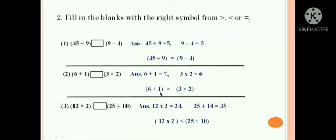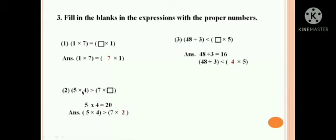Let us begin with the third one. 12 into 2 and another side 25 plus 10. Now 12 twos are 24 and 25 plus 10 is 35. So which is greater? Yes, 25 plus 10, that is 35. So you have to put the greater sign to another.